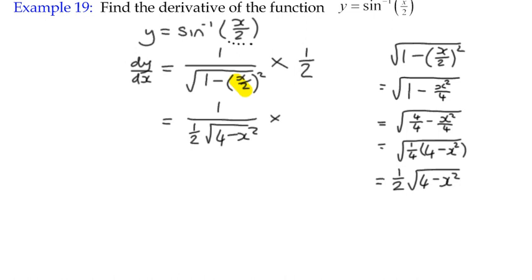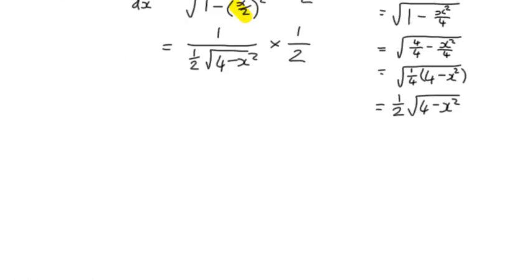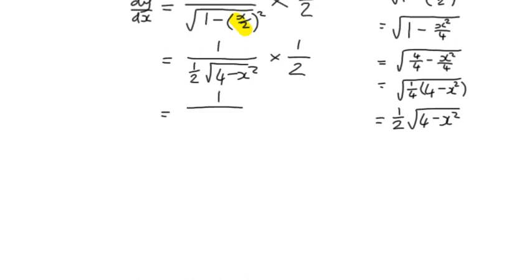OK, that 2 is going to come as the number 2 in the denominator, not a half. So I can write that as 1 over 2 times a half times the square root of 4 minus x squared. And those 2s are going to cancel out, and I get that. So my derivative, dy/dx, is 1 over the square root of 4 minus x squared.